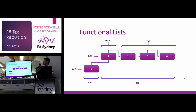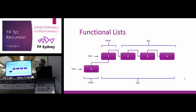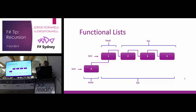The cells are immutable, so the entire list is immutable. You can add items, but the previous list is going to stay exactly as it was.